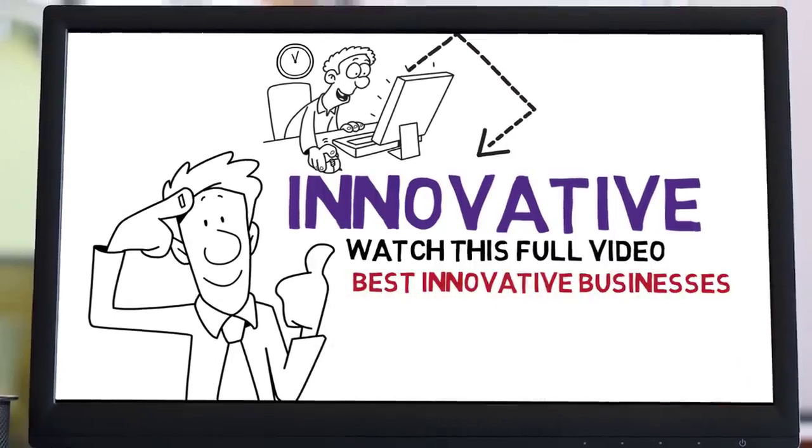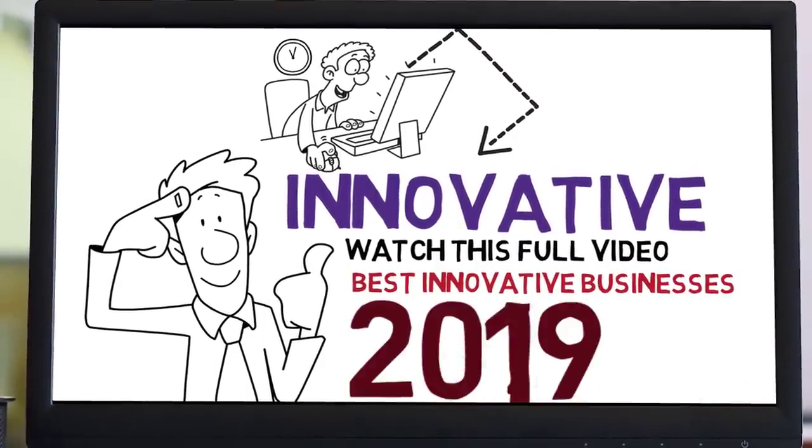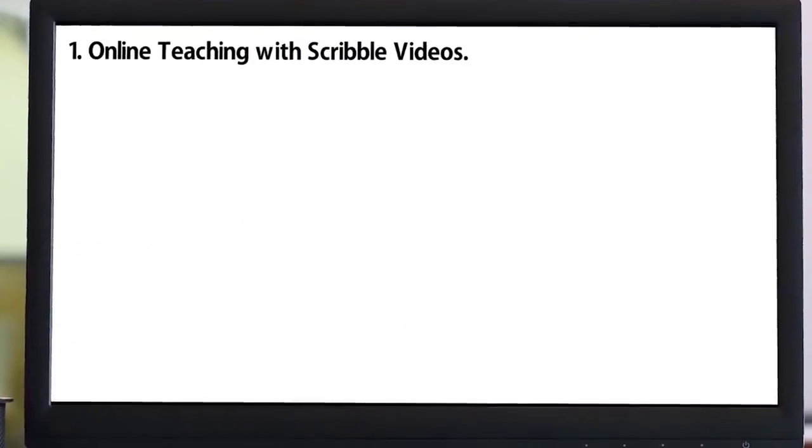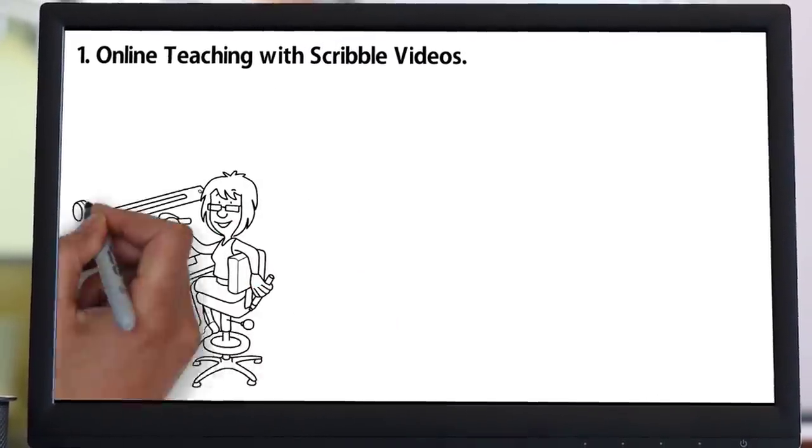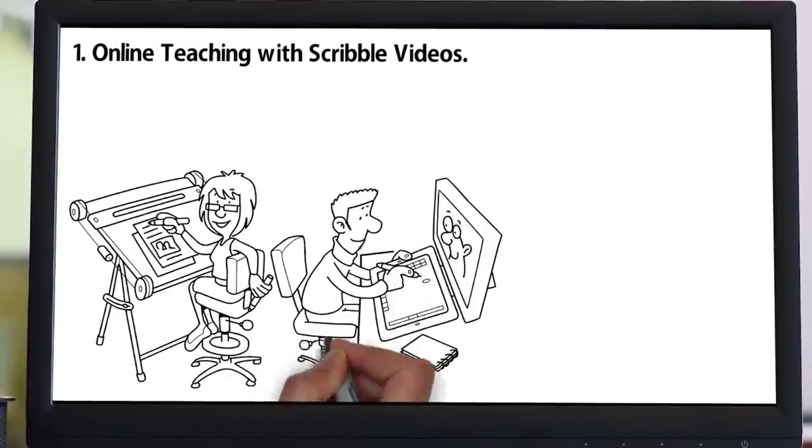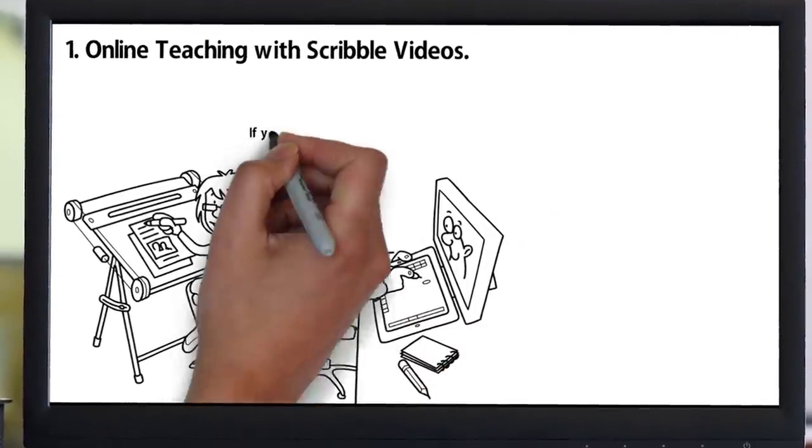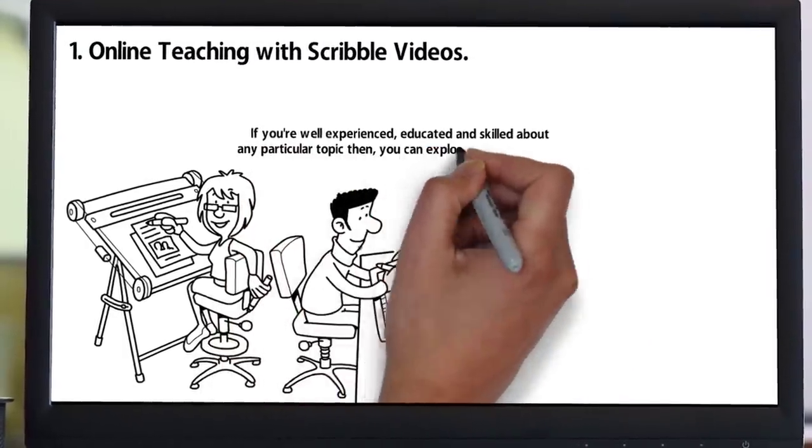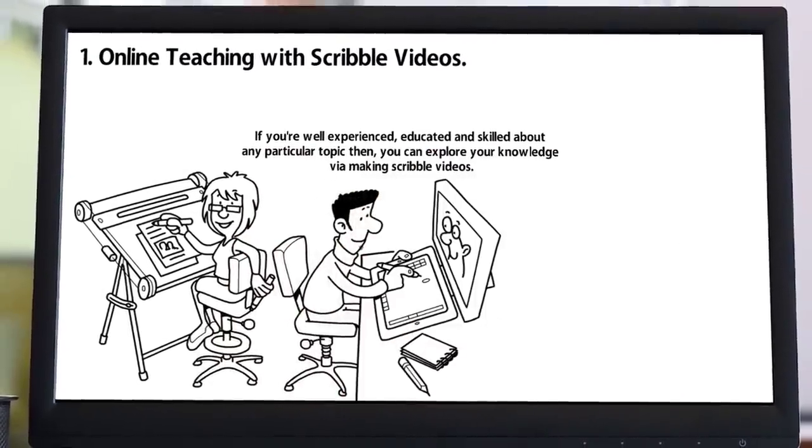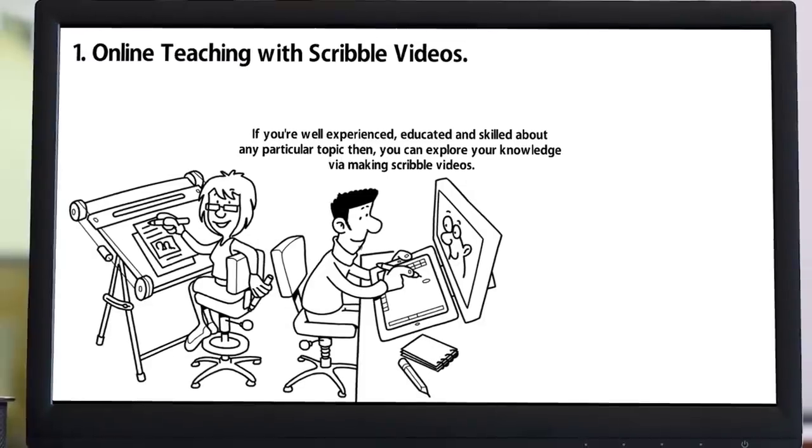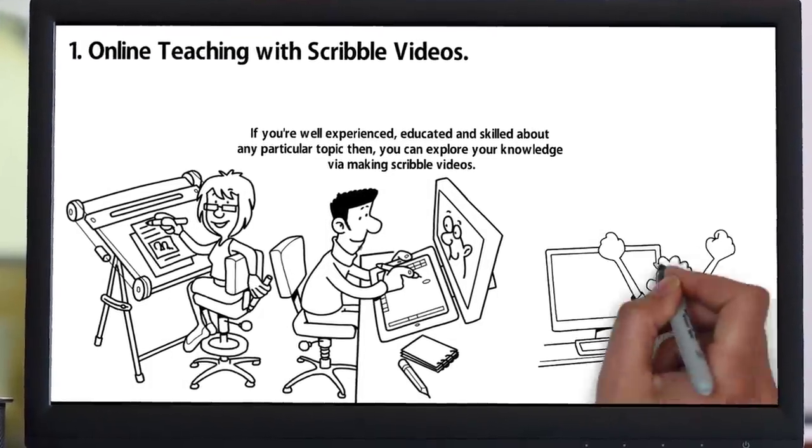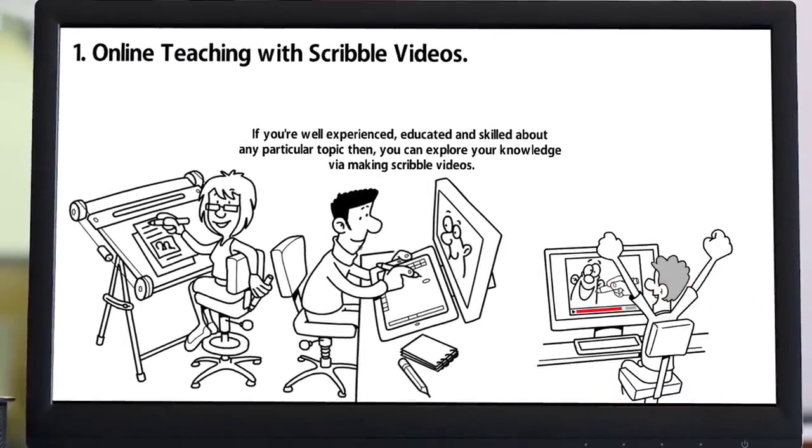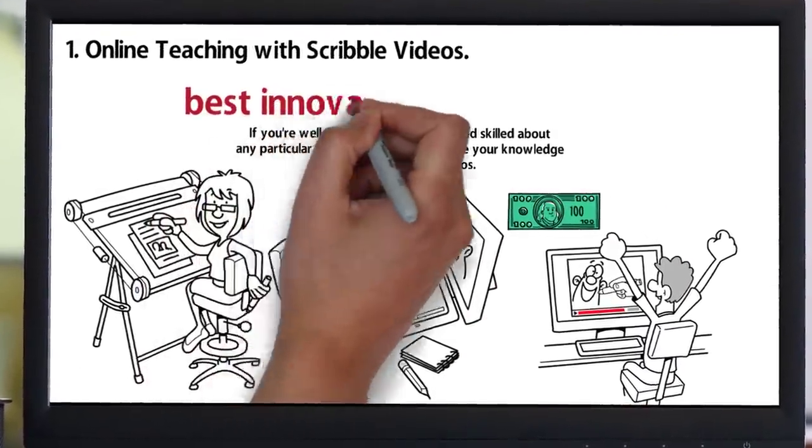Number one: Online teaching with scribal videos. Nowadays all new generation are already aware of scribal and animated videos. If you are well experienced, educated and skilled about any particular topic, then you can share your knowledge by making scribal videos. You can teach your online students with your animated scribal videos and charge according to monthly membership or annual. This is one of the best innovative business ideas to start in 2019.